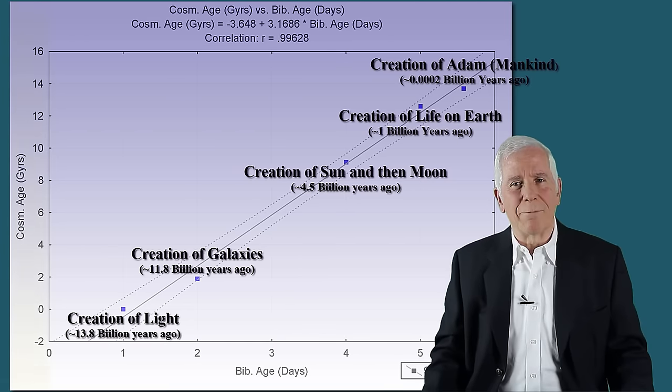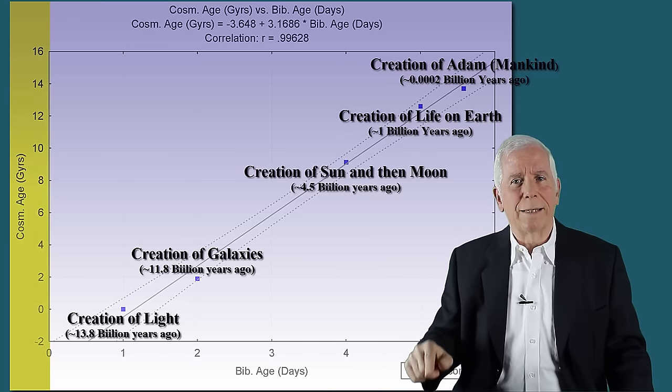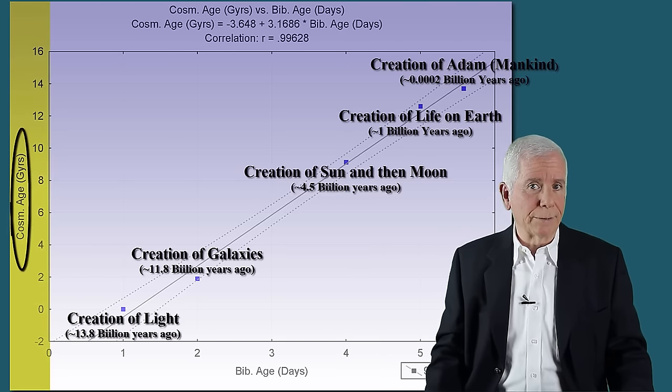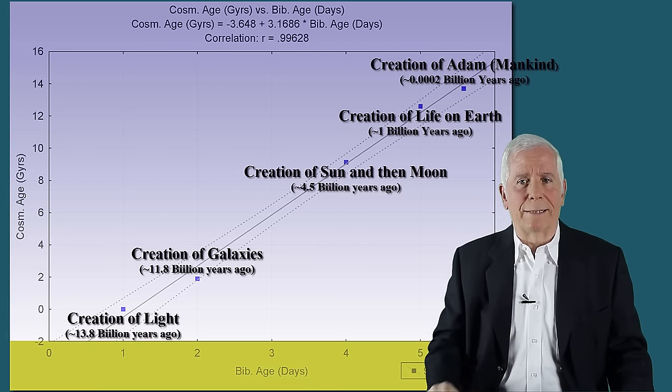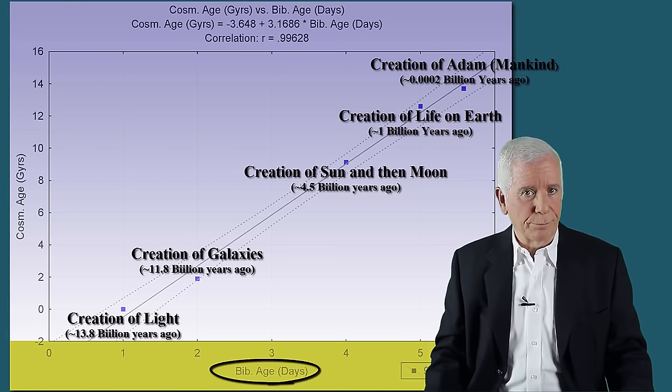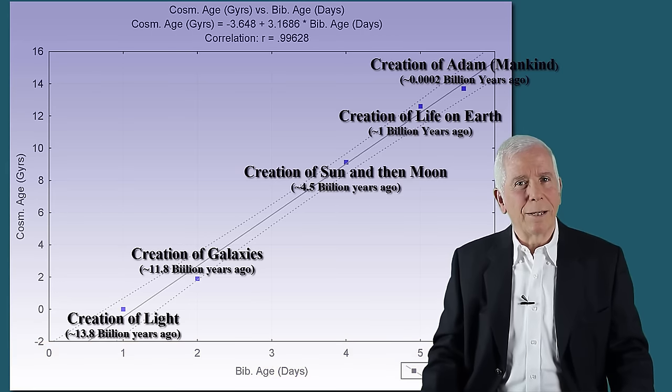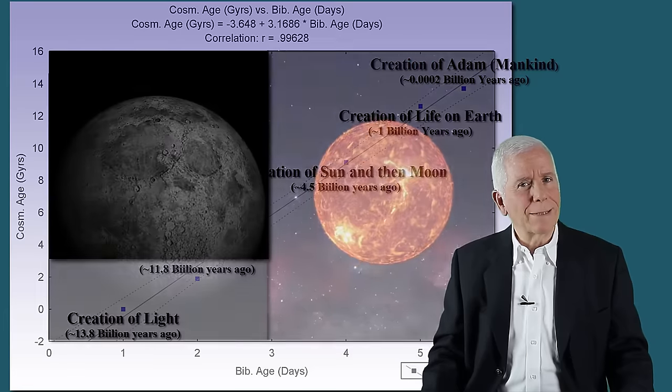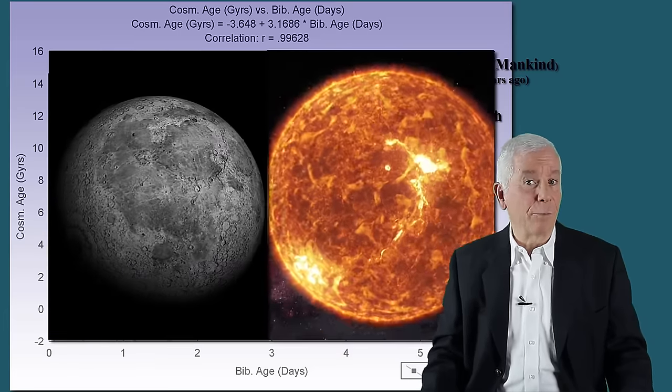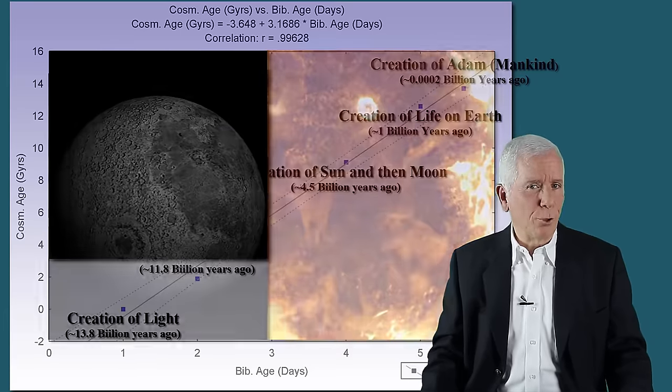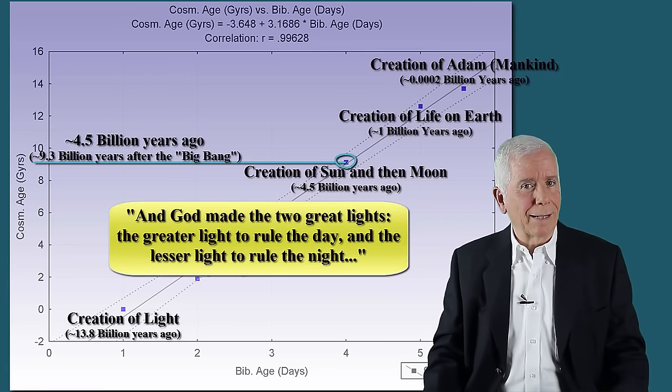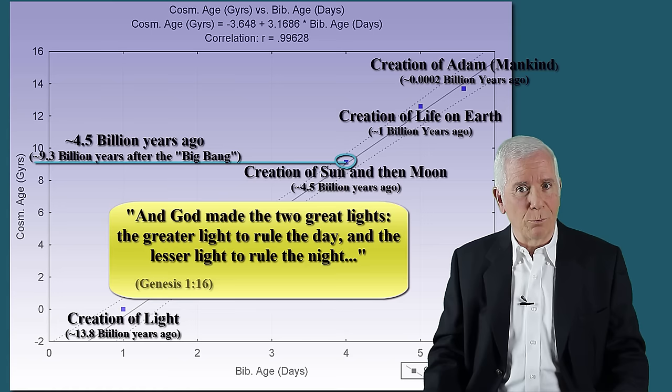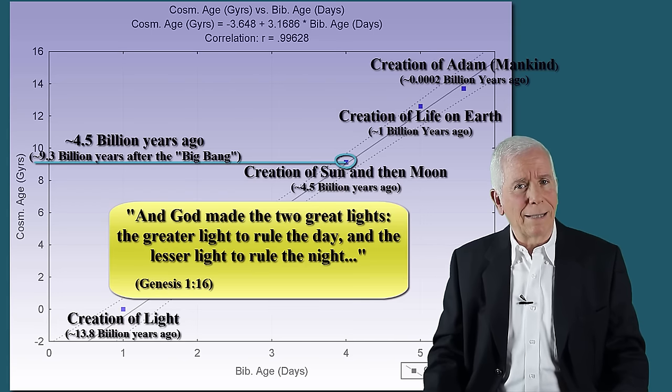On this plot, the vertical axis represents cosmological time in billions of years since the Big Bang, and the horizontal axis represents biblical time in terms of days. Note that according to modern science, Moon and the Sun formed about four and a half billion years ago. Therefore, the two points that represent the greater light toward the day and the lesser light toward the night, Genesis 1.16, are displayed in the graph by two separate points.